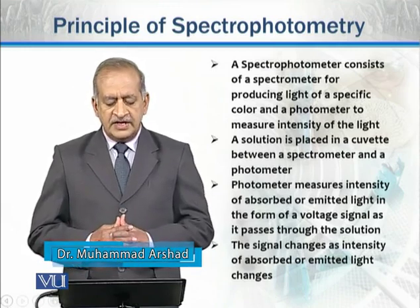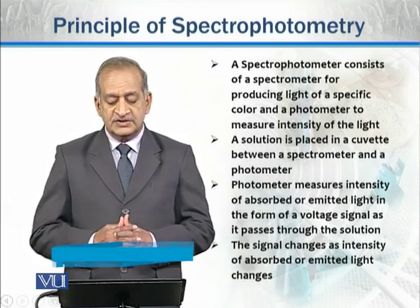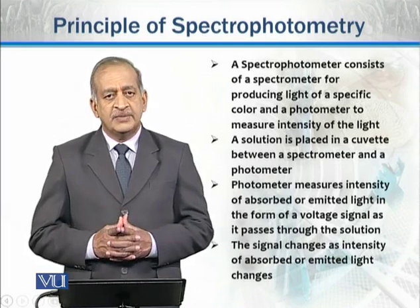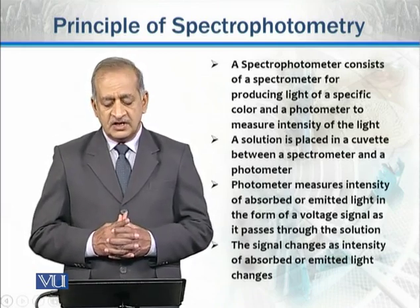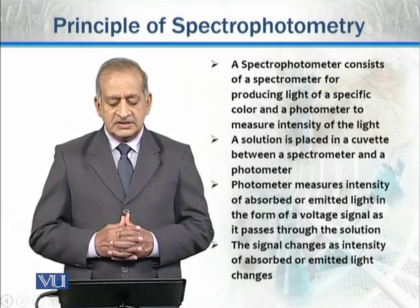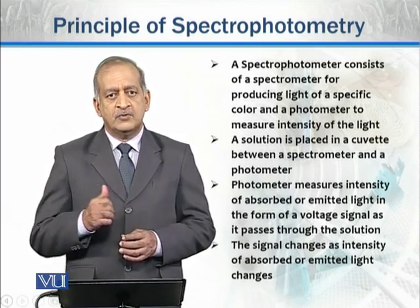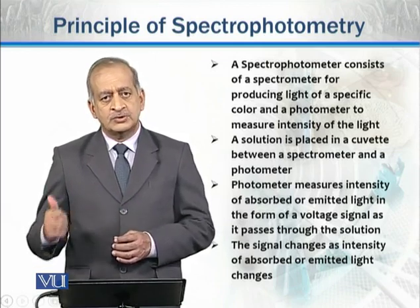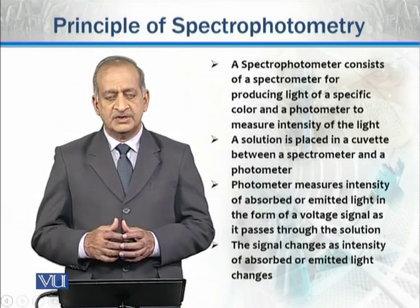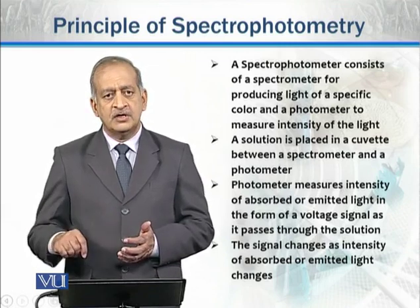The spectrometer produces light of a specific color. The photometer, as the name indicates, measures the intensity of that light. So the spectrometer produces light of a specific wavelength, and the photometer measures its power. These are the two main parts: spectrometer and photometer.